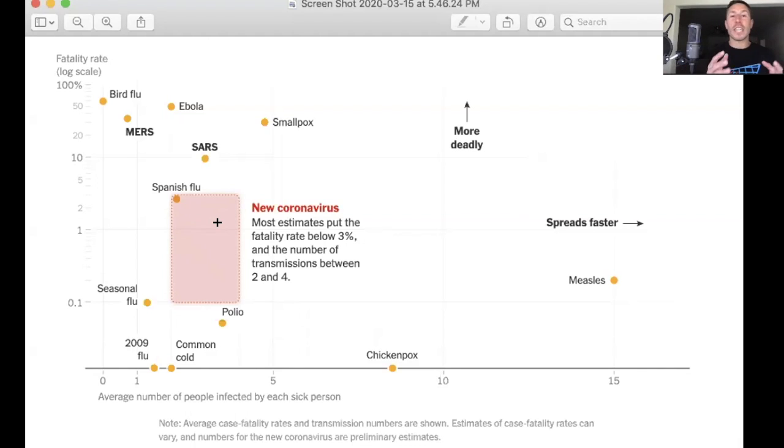It's the combination of infectivity and virulence that we're trying to figure out. It's evolving every day. Again, we won't know the case fatality rate because we won't know how many people are infected by the virus. But estimates are 0.5 to 3, with most people saying around 3%.